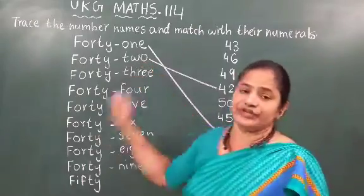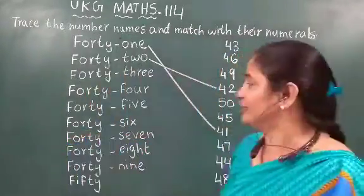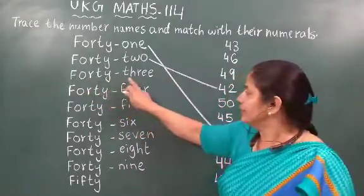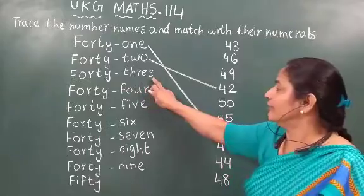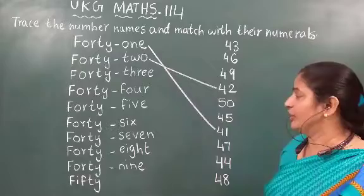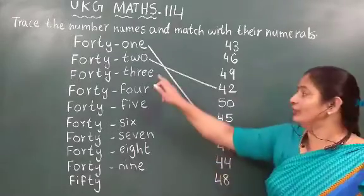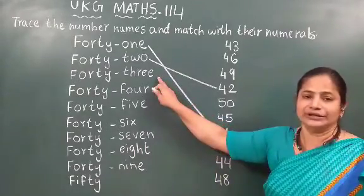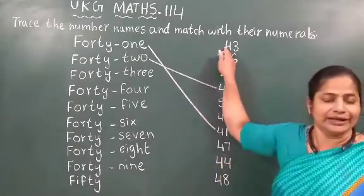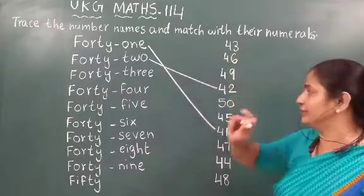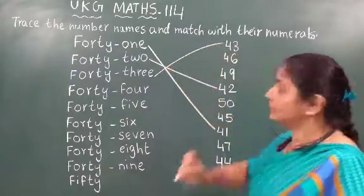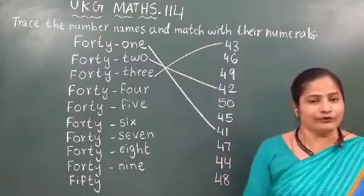After 42, which number will come? 43. What is the spelling? F-O-R-T-Y T-H-R-E-E, 43. Now you have to find out the numerals of 43. It is already written here. Now you can match the number names with the numerals of 43.